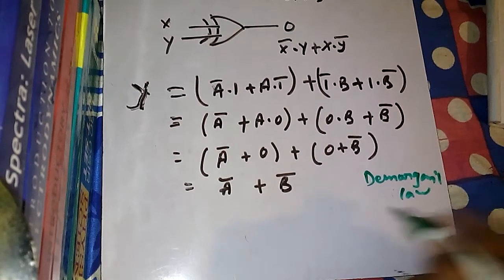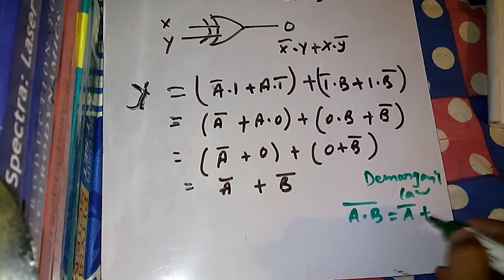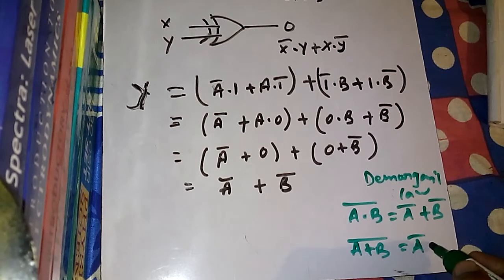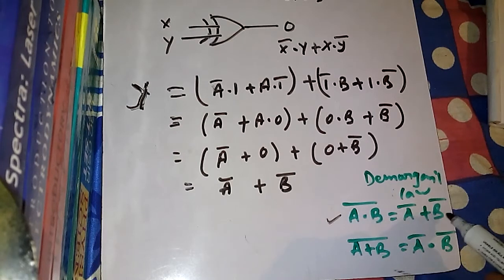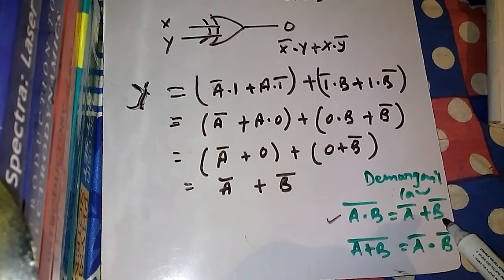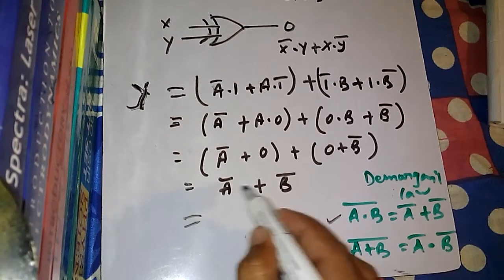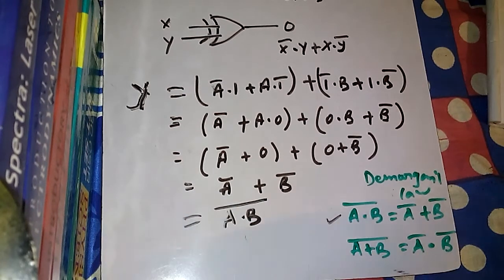De Morgan's law states: if we have A dot B bar, we could separately write A bar plus B bar; and if we have A plus B bar, we could write A bar dot B bar. For our problem, A dot B bar can be written as A bar plus B bar. But here we already have A bar plus B bar — that means we have the right-hand side already. So we can write A bar plus B bar equals A dot B bar from De Morgan's law.